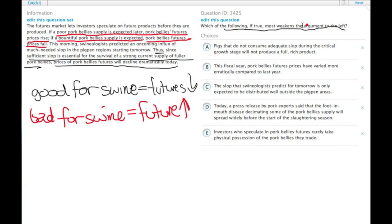So, we need to weaken the argument to the left that pork bellies futures will decline dramatically. So if they're going to decline dramatically, we need something that is going to, so the price of the futures is going to go down. That's the prediction.